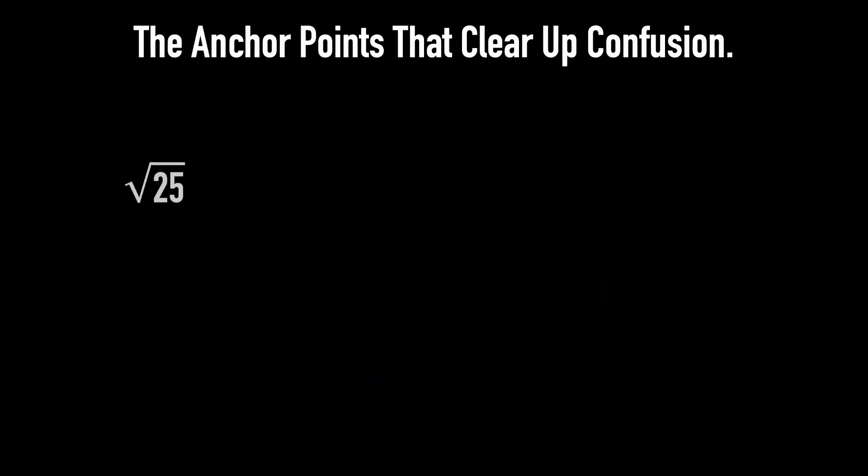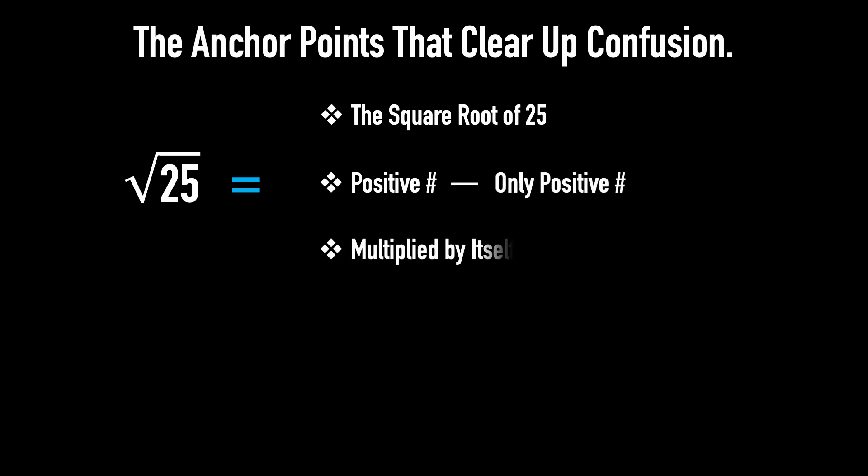This notation is read as the square root of 25. It means a positive number, and importantly only one positive number, that when multiplied by itself gives 25. 5 is a positive number and 5 multiplied by itself gives 25. So the square root of 25 is 5.